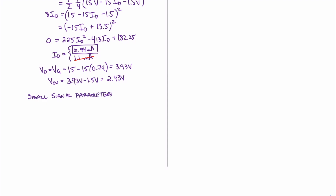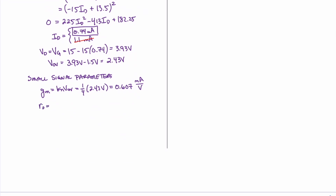With that, we can now find our small signal parameters. Starting with GM, we know that GM equals KN times VOV. In this case, KN is one-quarter and VOV we just found as 2.43 volts. Therefore, GM equals 0.607 milliamps per volt. In this circuit, we were given an early voltage of 50 volts, so we have an output resistance and must calculate that small signal parameter. We know that RO equals VA over ID. VA is 50 volts and ID is 0.74 milliamps, which results in an RO of 67.75 kilohms.